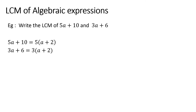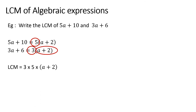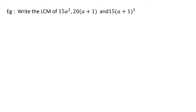Now we spot the highest powers of each type of term. The highest power of 5 is 5, the highest power of 3 is 3, and (a plus 2) is the only power of that expression. So the LCM is 3 into 5 into (a plus 2), that is 15 times (a plus 2).